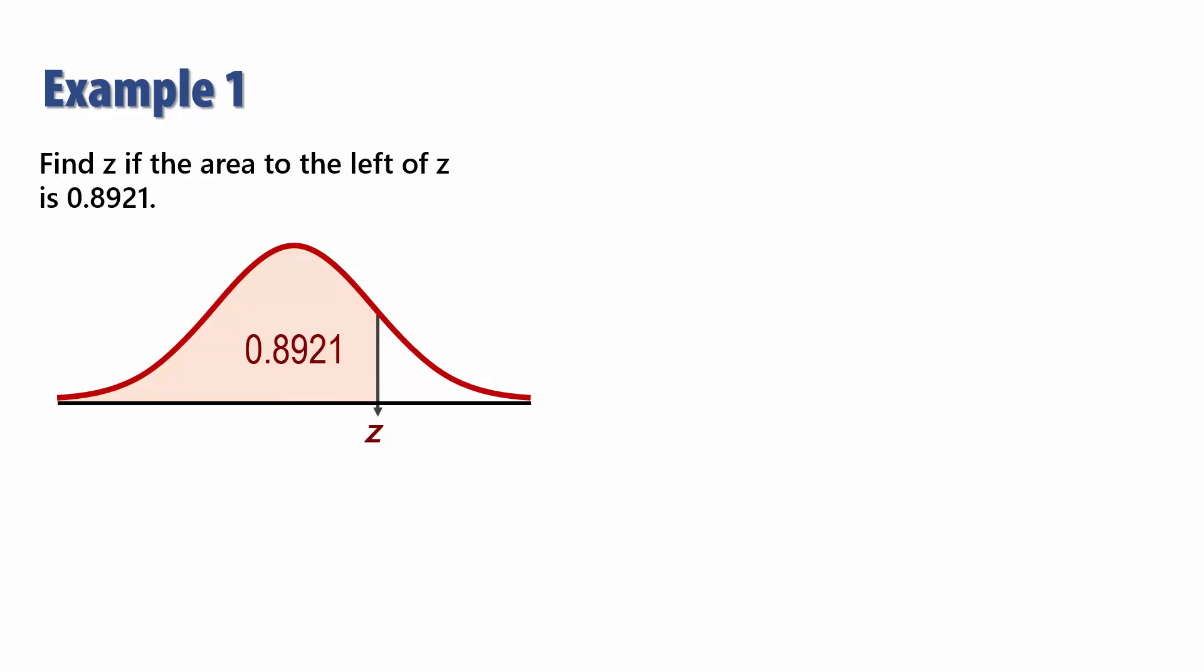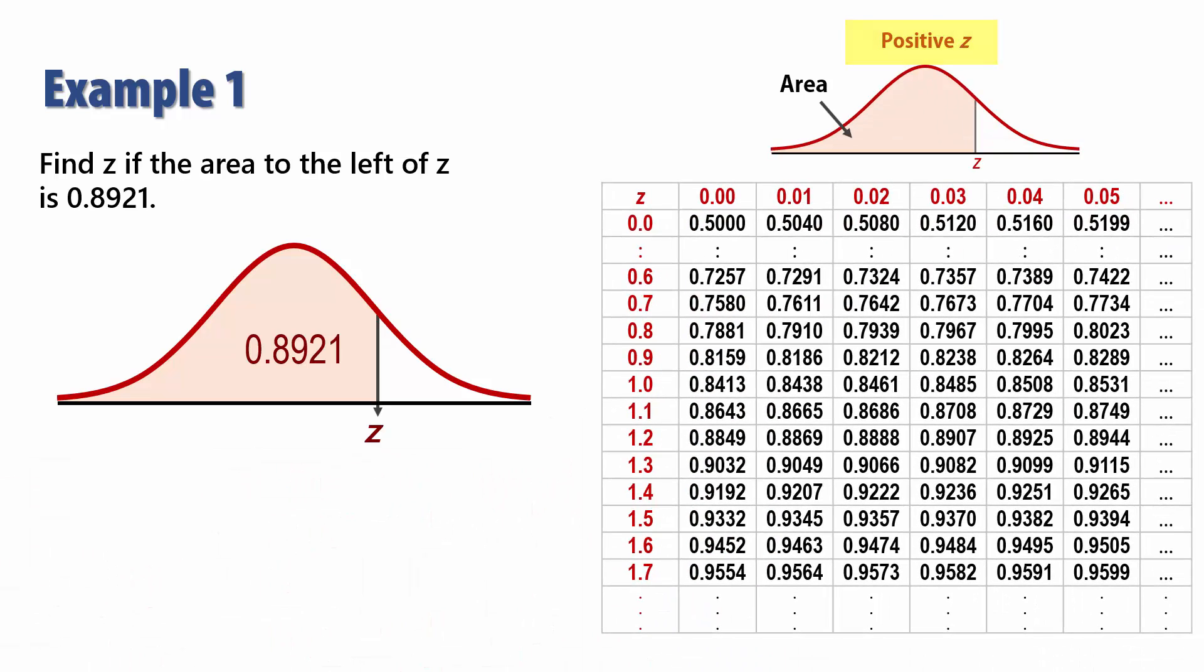So we go to the positive Z score section of the table and look for the area closest to 0.8921. Note that the Z scores are printed in red and the areas in black. The closest area to 0.8921 we find here is 0.8925, corresponding to a Z score of 1.24.